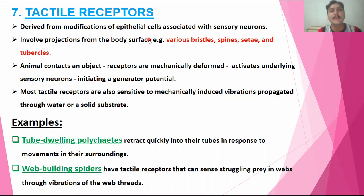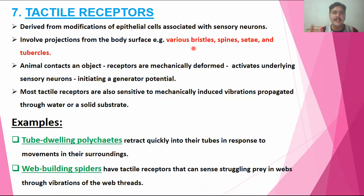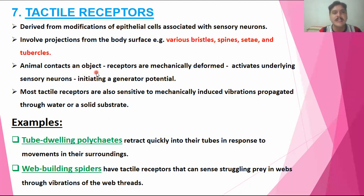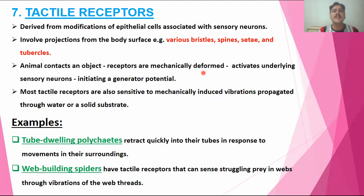Tactile receptors are basically derived from epithelial cells and are associated with sensory neurons. These are present in different animals and act as tactile receptors that respond to tactile stimuli. When an animal contacts an object, the receptors are mechanically deformed — if someone touches the organism, the receptors are deformed. This is the basic mechanism of tactile receptors.